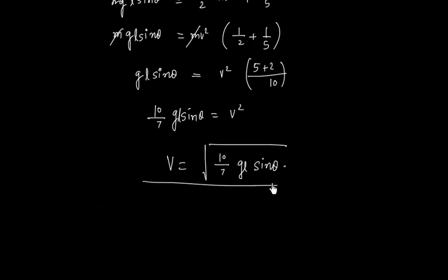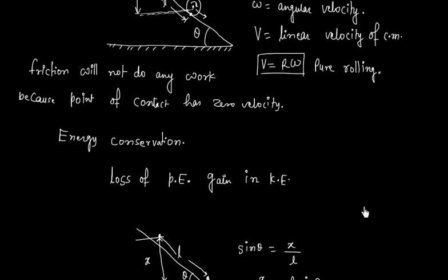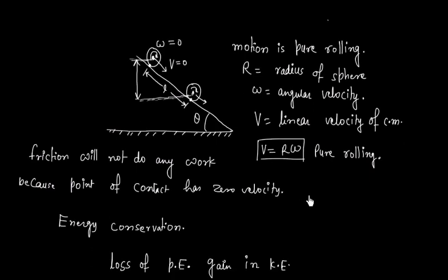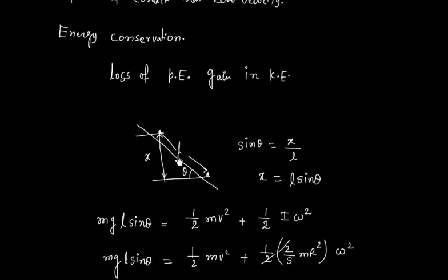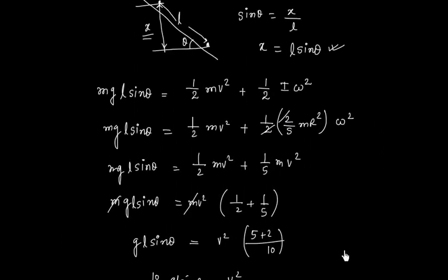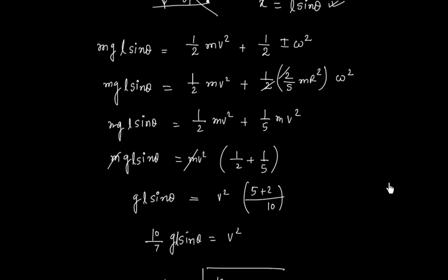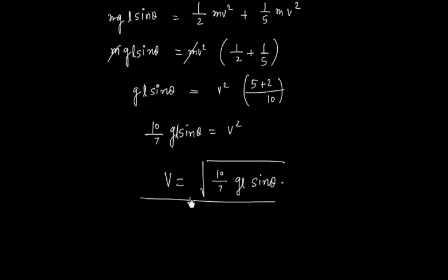So this is an easy problem. The key thing is to account for the loss in potential energy. Initially the center of mass is here and finally it is here, so the center of mass has travelled a distance L along the incline. We calculate the height x equals L sin theta, then apply energy conservation — loss in potential energy equals gain in kinetic energy — to find the velocity after travelling distance L along the incline.